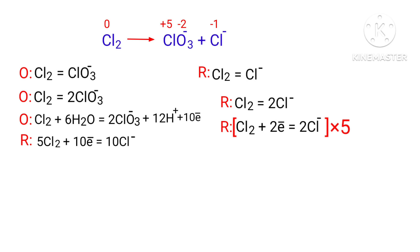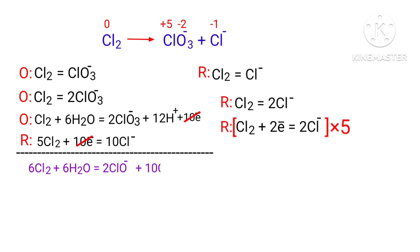Now you can add the two half-reactions together and cancel the same terms. Then divide the resulting equation by a coefficient of 2.